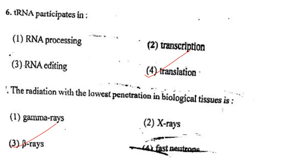Next one: tRNA participates in option 1, RNA processing; option 2, transcription; option 3, RNA editing; option 4, translation. Answer is option 4: translation.